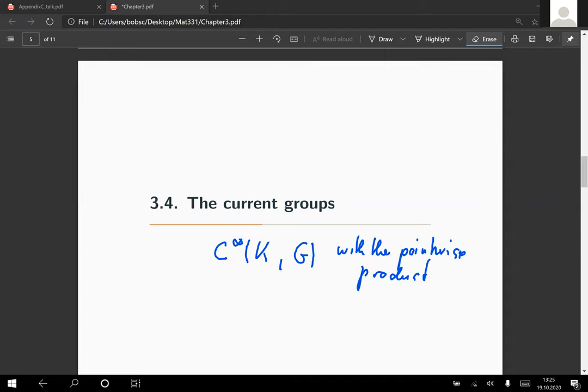After one has done this, it's not hard to see that this structure again turns the current group into a Lie group. In fact, both manifold structures are diffeomorphic to each other, so this other construction does not yield another structure.